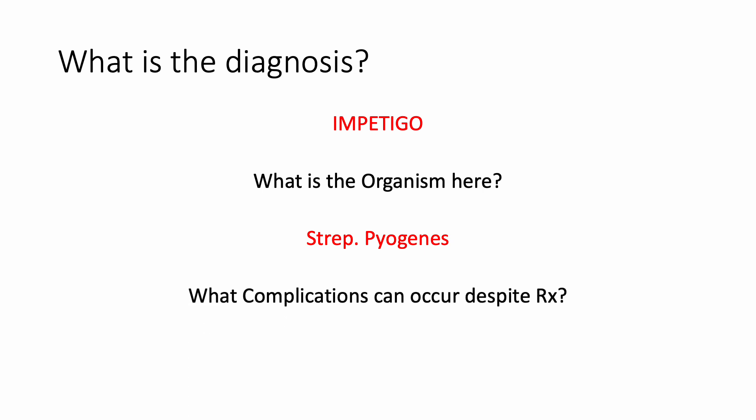What complication can occur despite giving the right treatment? Remember, Strep pyogenes can cause a throat infection and skin infection — which is the impetigo we are seeing here — and the complication that can happen is post-streptococcal glomerulonephritis, which occurs about two to three weeks later. The patient can present with hematuria, lethargy, deranged renal function, and on urine dipstick you will see protein and blood.